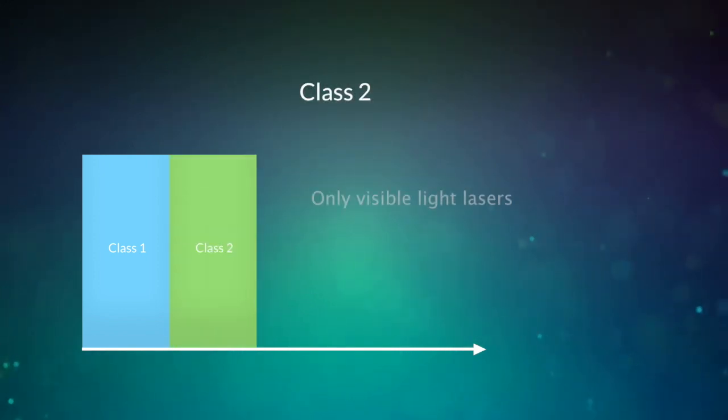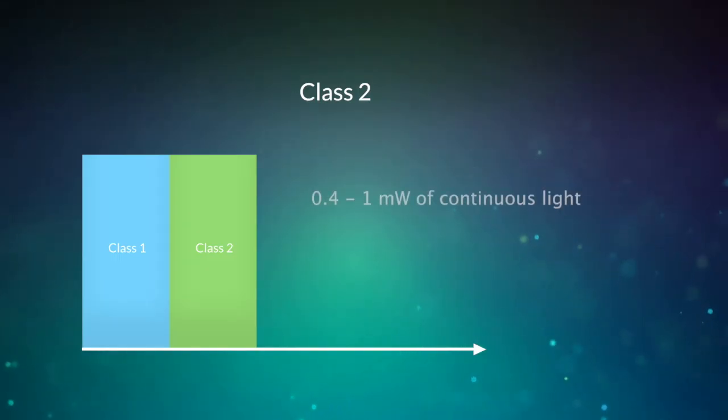Class 2 lasers only include visible light lasers ranging from 400 to 700 nm and are safe to use due to the blink reflex. Class 2 lasers are limited to between 0.4 and 1 milliwatt of continuous light. Intentional viewing of Class 2 lasers, however, can lead to eye damage.